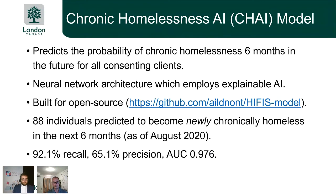Some quick results: there are 7,100 active clients in the London shelter system, and the model has been in production since August. As of August 30th, it was predicting 88 individuals would become newly chronically homeless, and our shelter system is working to prioritize resources to those individuals. The production performance metrics we achieved are 92.1% recall and 65.1% precision. Recall was the most important metric from a business value perspective — the homeless prevention division prioritized recall over precision, given the class imbalance.